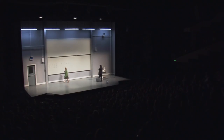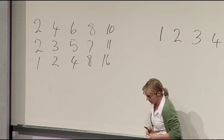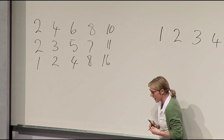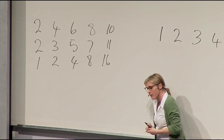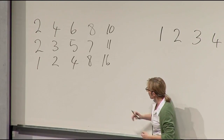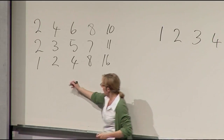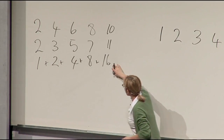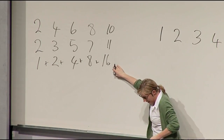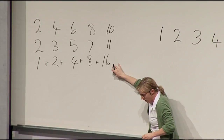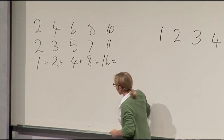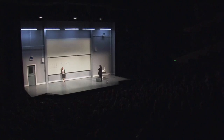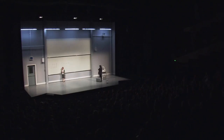Now, if I was to add together the terms of a sequence, we would have what is known in mathematics as a series. So, 1 plus 2, plus 4, plus 8, plus 16 is a finite series of five terms with a sum of 31.